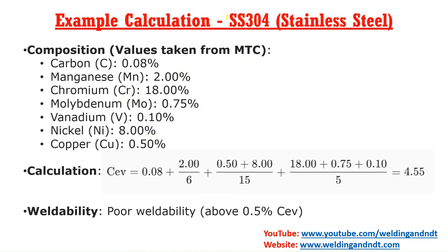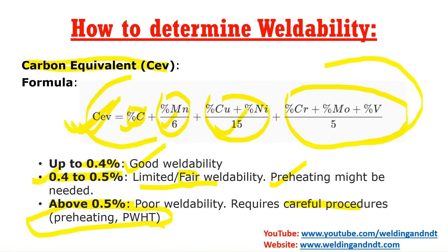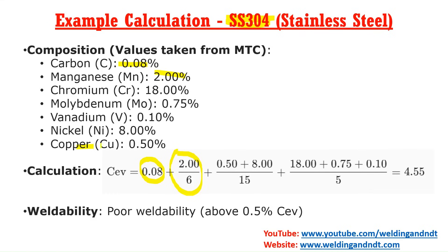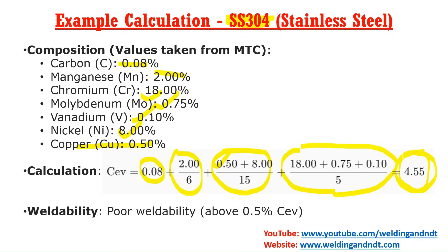Next, we'll calculate the carbon equivalent of SS304. We put all values into the formula: carbon is 0.08, manganese is 2 so we have 2 divided by 6, copper is 0.5 and nickel is 8 so we have 0.5 plus 8 divided by 15, and finally chromium is 18, molybdenum is 0.75, and vanadium is 0.10. After calculating, we get 4.5.